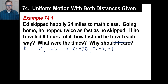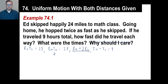So we have R sub S times T sub S equals 24, and R sub H times T sub H equals 24. We notice R sub H is two R sub S. We can put that in here, so we have two R sub S times T sub H equals 24.